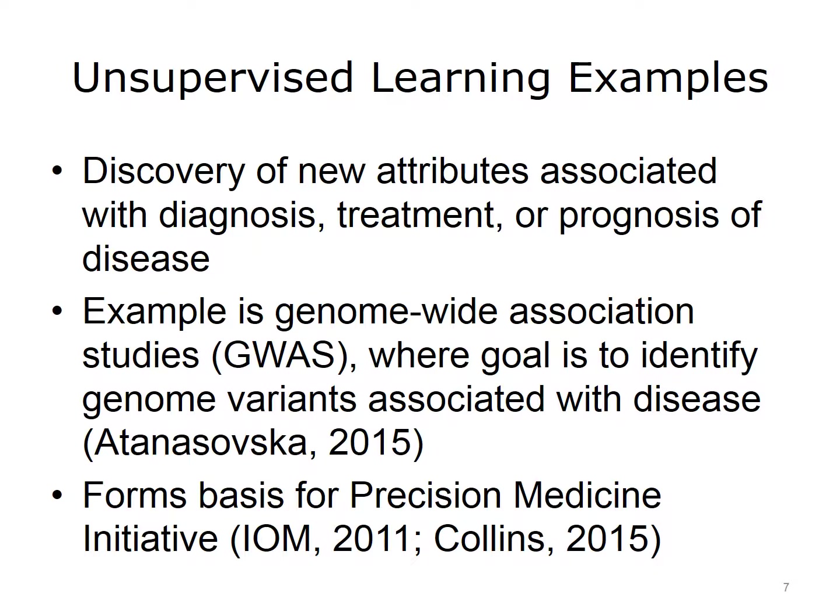A common use of unsupervised learning is the discovery of new attributes that may be associated with clinical questions, such as diagnosis, treatment, or prognosis of disease. An example is the Genome-Wide Association Study, or GWAS, where the goal is to identify genome variants that might be associated with a particular disease. These types of investigations form the basis of precision medicine, where the goal is to identify causes and factors associated with the disease more precisely and develop more targeted treatments.